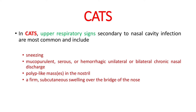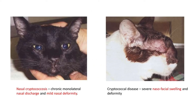In cats, this disease is very important. Upper respiratory signs secondary to nasal cavity infection are most common and include sneezing, mucopurulent or serous or hemorrhagic unilateral or bilateral chronic nasal discharge, polypoid masses in the nostril, and a firm subcutaneous swelling over the bridge of the nose — called the Roman nose. These pictures show nasal cryptococcosis in cats with chronic unilateral nasal discharge, mild nasal deformity, and in another case, severe nasofacial swelling and deformity.